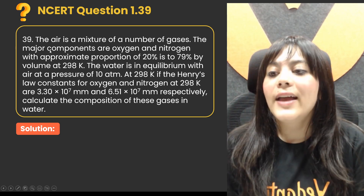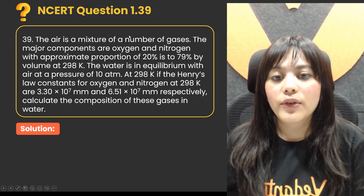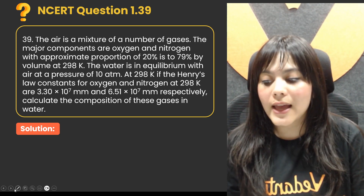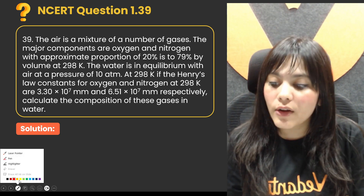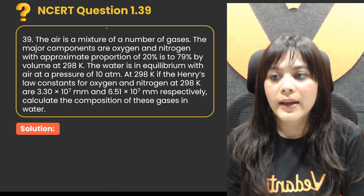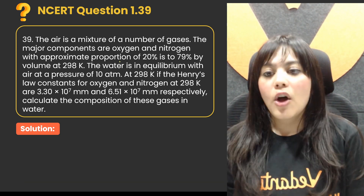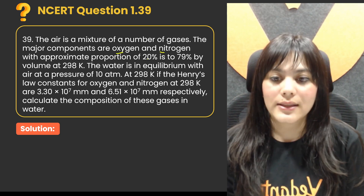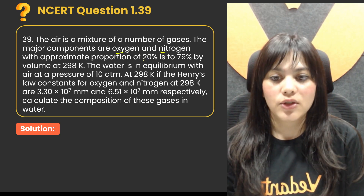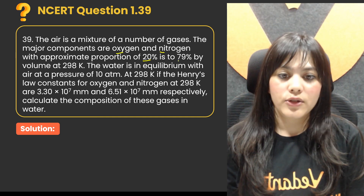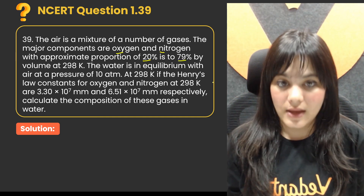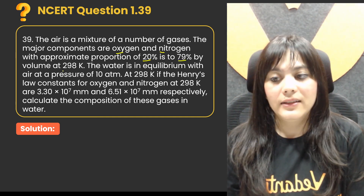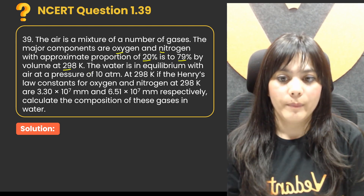The question is: air is a mixture of a number of gases. We know that air is a mixture of a number of gases, mostly nitrogen and oxygen. The major components are oxygen at approximately 20% and nitrogen at 79% by volume at room temperature.